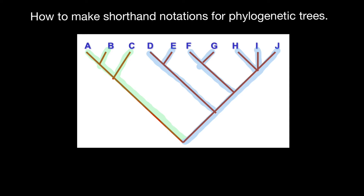Here's the logic — it is very simple. We start with species A and B, separate them with a comma and include them in parenthesis. Then a comma again and species C, and we include them in parenthesis again.